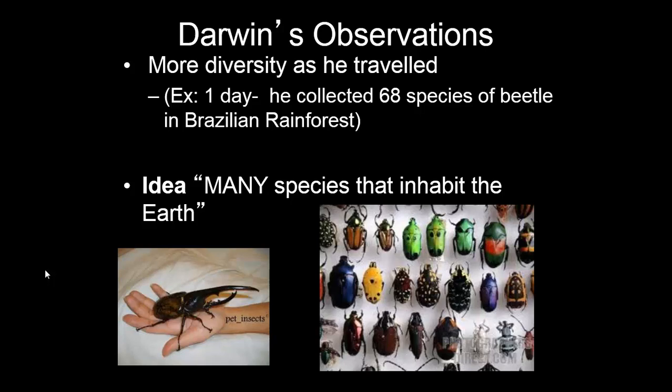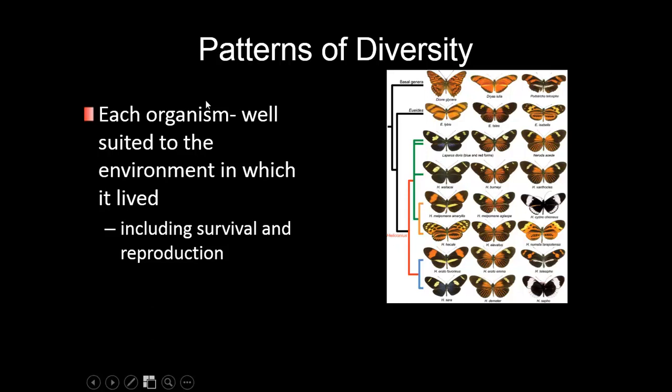To give you an idea, Darwin made many observations. He saw a lot of diversity in the Brazilian rainforest and one day collected 68 species of beetle. This started to make him think there are many species that inhabit this Earth. Darwin also noticed that these species are very diverse, and that each organism is well suited to its environment — including being able to survive and reproduce.